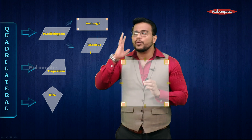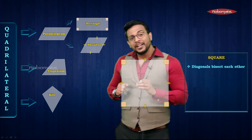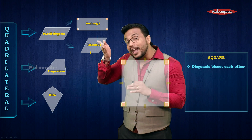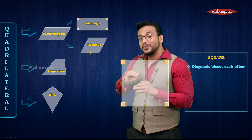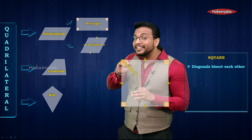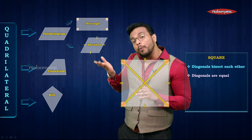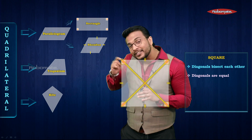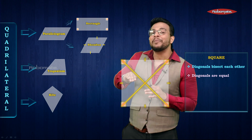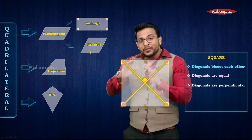In a square, each angle is 90 degrees and each side is equal. The diagonal properties are: diagonals bisect each other; from the rectangle modification, diagonals are equal; and from the rhombus modification, diagonals are perpendicular. So those are the three diagonal properties of a square.